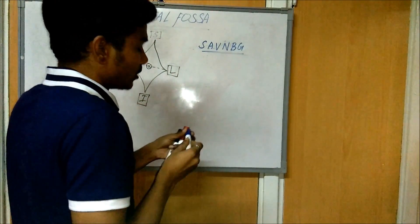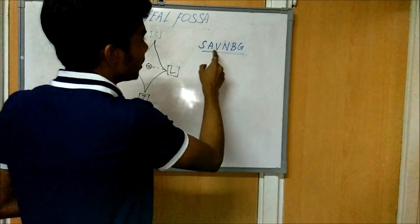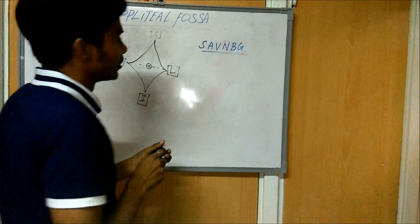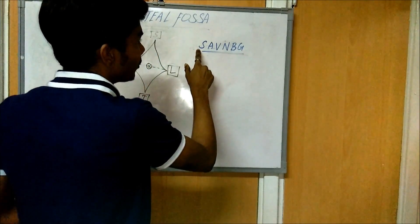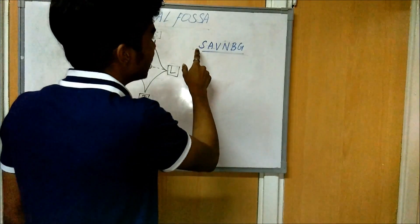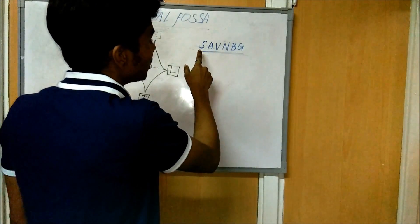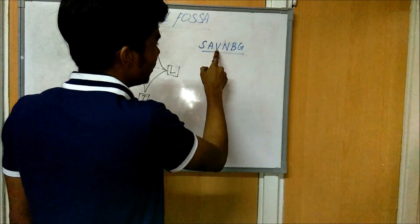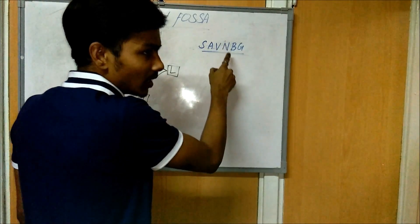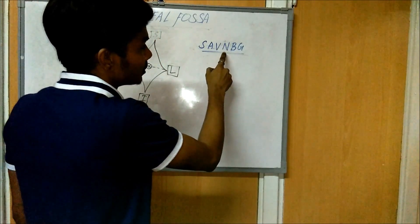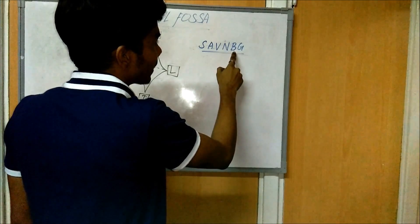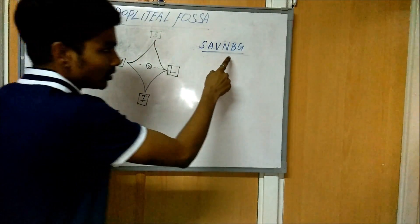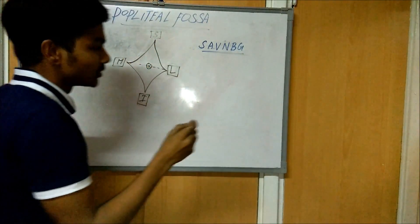As you know, the letters stand for: S — semi-membranous and semi-tendinous muscle; A — popliteal artery; B — popliteal vein; N — tibial nerve; B — biceps femoris muscle; and G — gastrocnemius muscle.